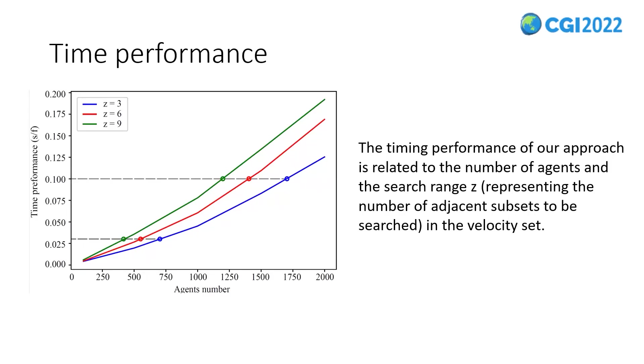The time performance of our approach is related to the search range z. When the search range is set to three, our method can simulate about 750 agents in 30 frames per second and about 1750 agents in 10 frames per second. Thank you for your attention.